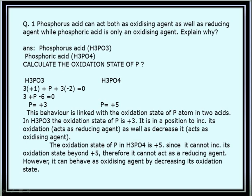The first question is: phosphorous acid acts as both an oxidizing agent as well as a reducing agent, while phosphoric acid is only an oxidizing agent — explain why. The formula for phosphorous acid is H₃PO₃ and for phosphoric acid is H₃PO₄.